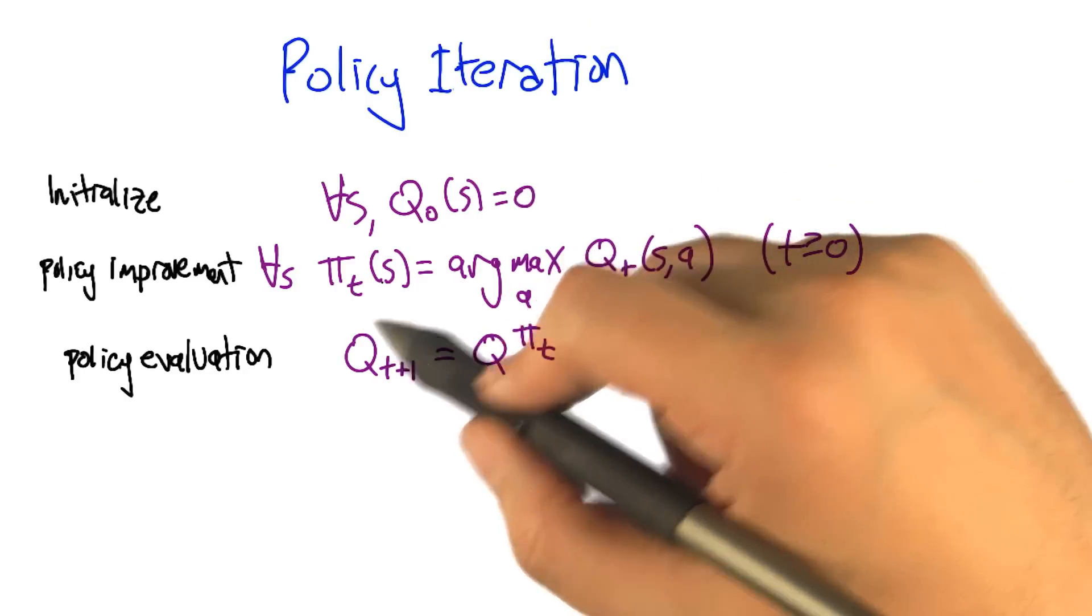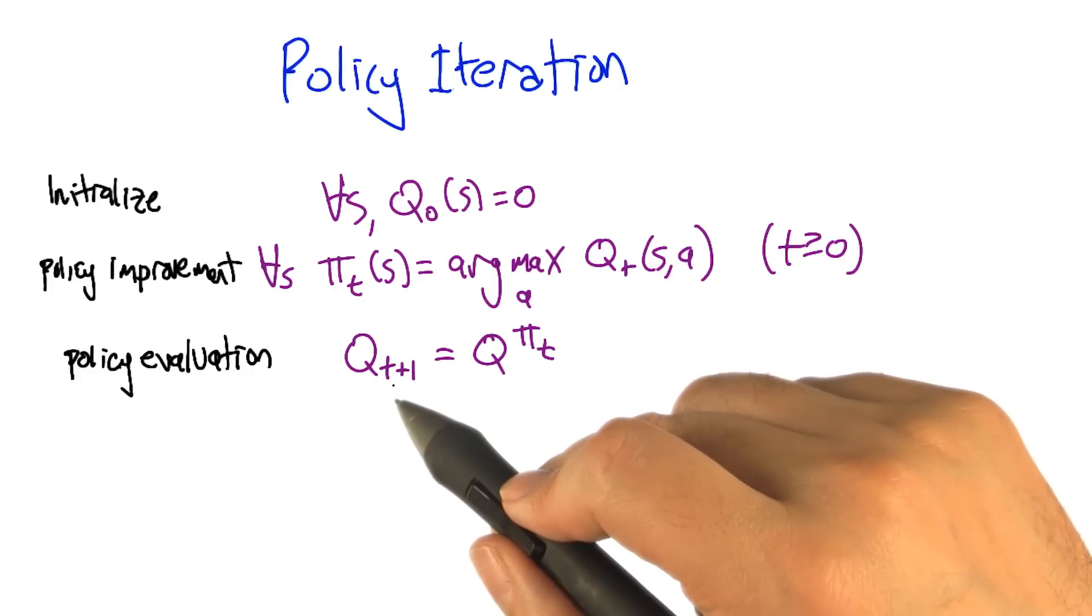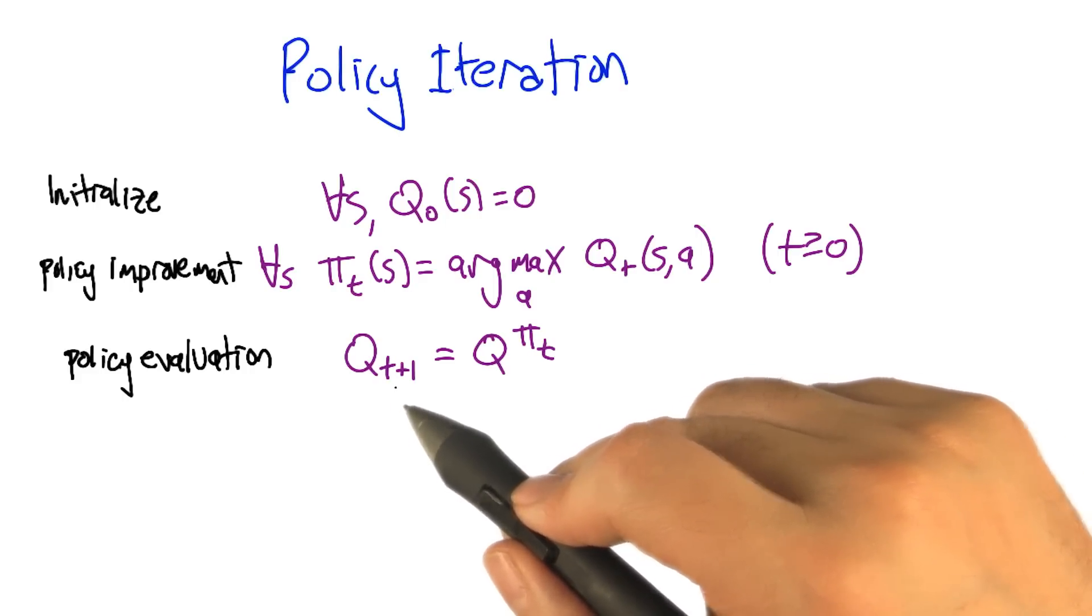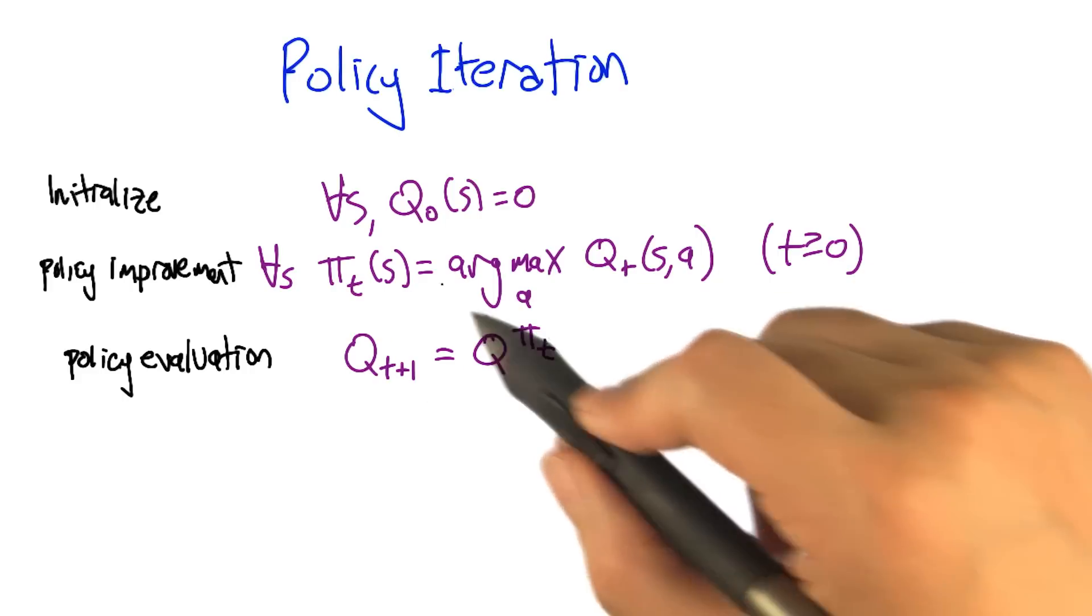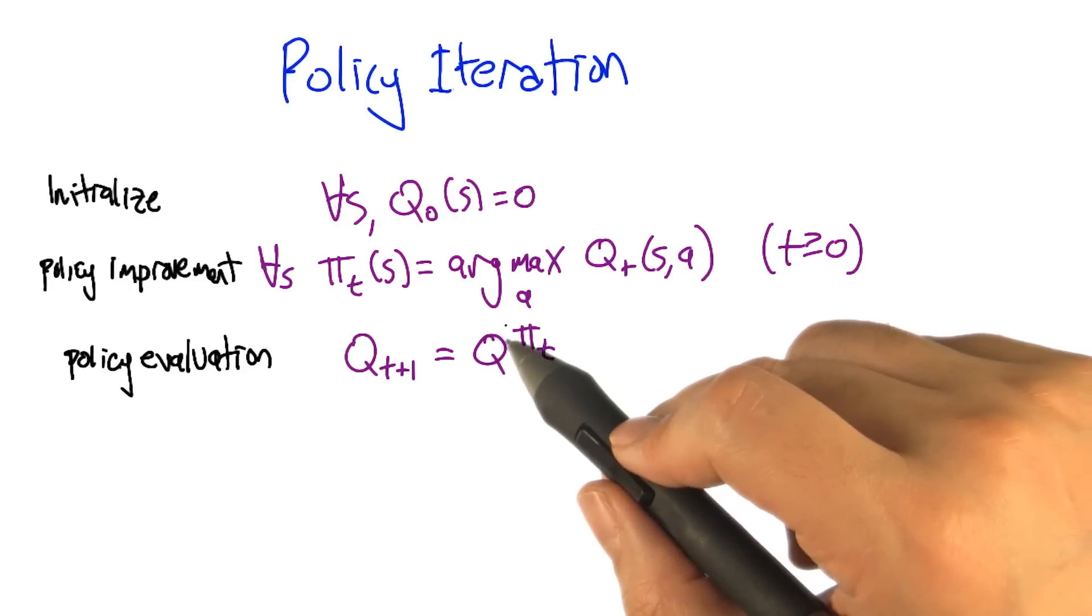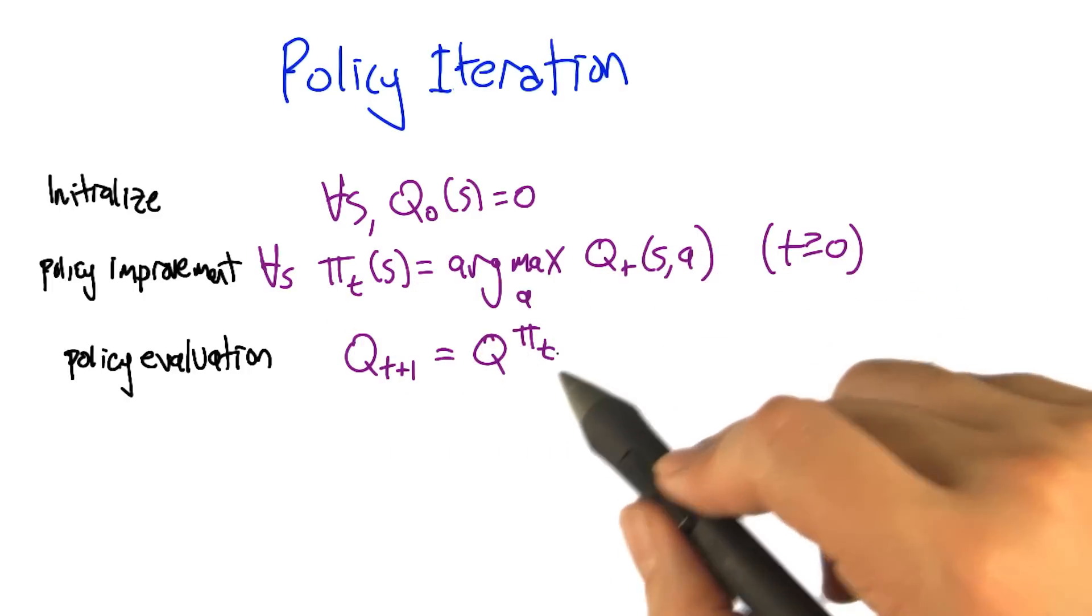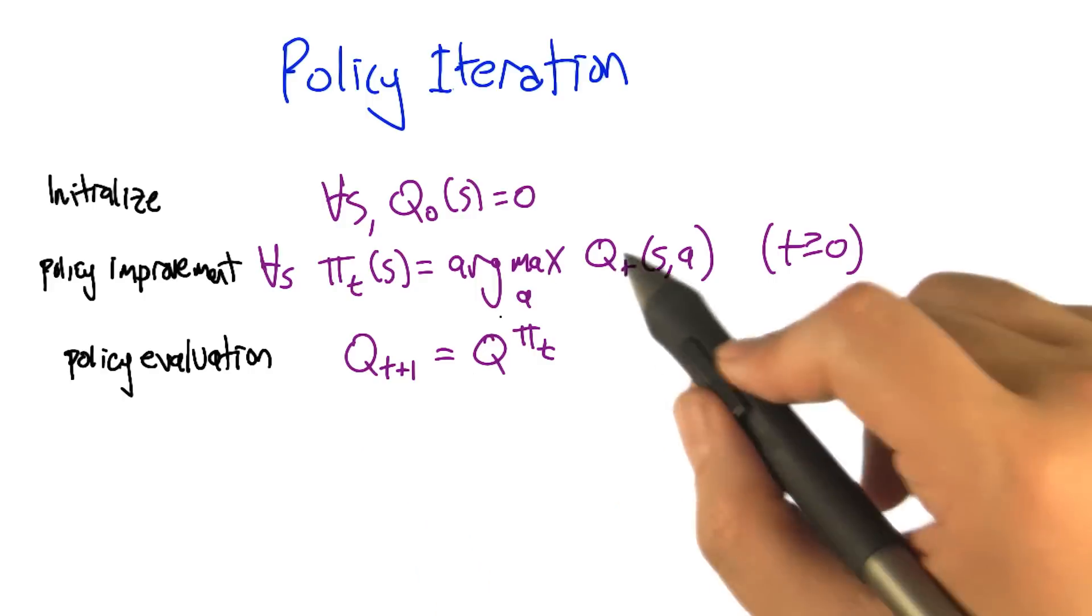call that pi sub t. Then that policy, we're going to evaluate it to get a new Q function, q t plus 1. And then we're going to repeat and iterate this over and over and over again. So each time we go around this loop, we're taking our previous Q function, finding its greedy policy, taking that greedy policy, finding its value function, and repeating.